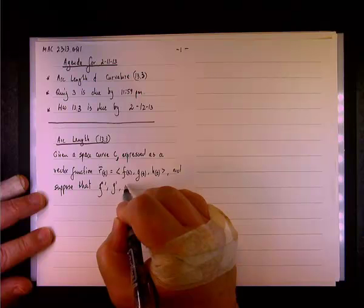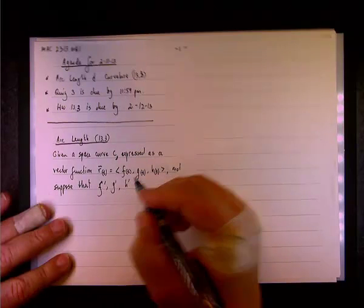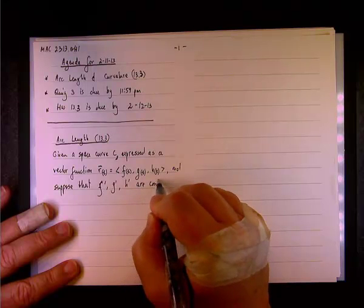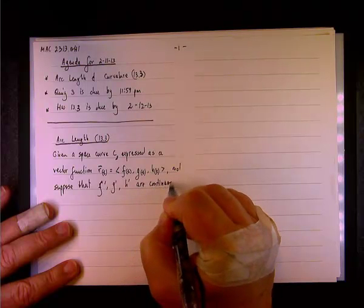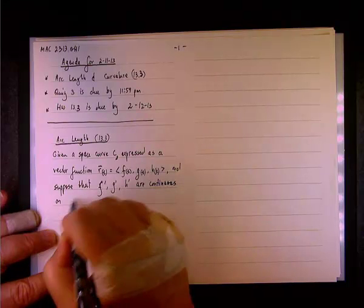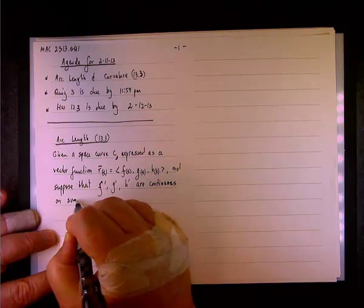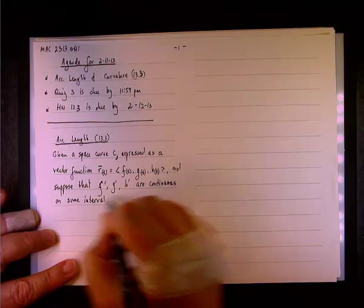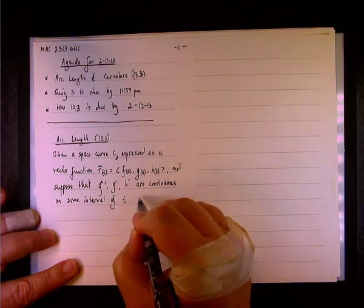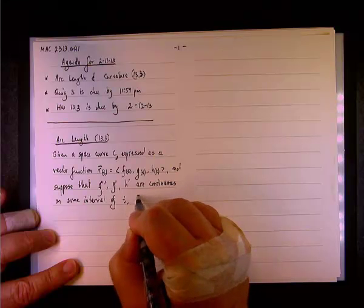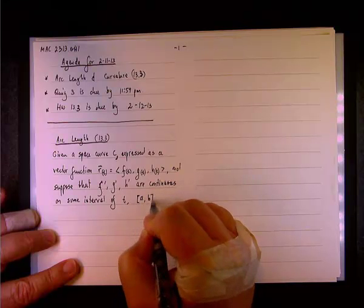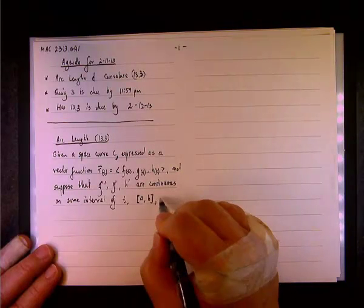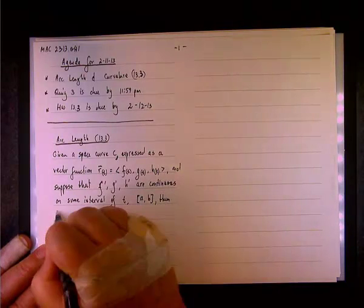let's do F of T, G of T, and H of T they're all continuous on some interval of T from A to B, like so, so it's a closed interval of T from A to B, then